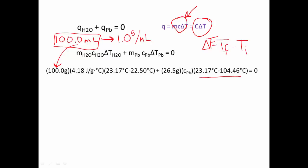So now what we do is we simply solve for our lead specific heat. The first thing I'm going to do so that I keep my sig figs in check is I'm going to do this subtraction right here. So 23.17°C minus 22.50°C. They each go to the hundredths, so our answer is going to go to the hundredths. That is 0.67°C.